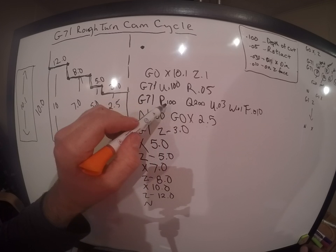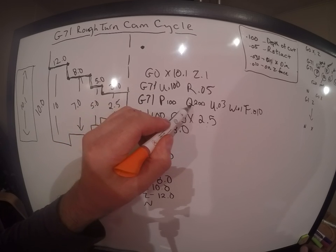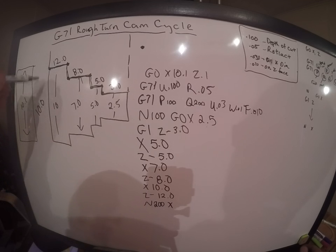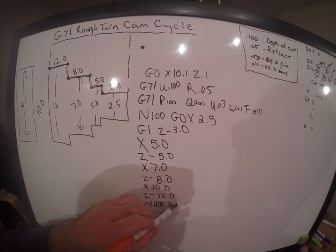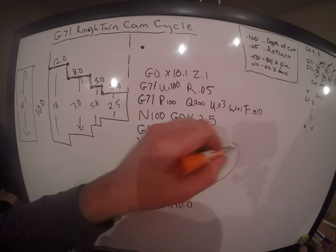We got our P and our Q. We've already put in our P on N100. Now we're going to put in our Q. So we're going to go N200, and then X at our largest diameter, which is 10, 10 inch. There you have it, all finished. That is your G71 rough turn cam cycle. And that's as simple as I can put it. So good job.